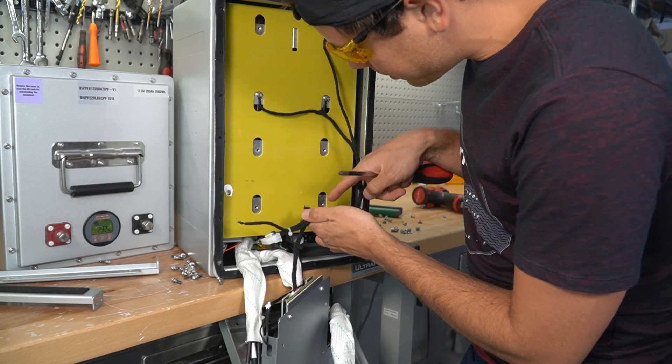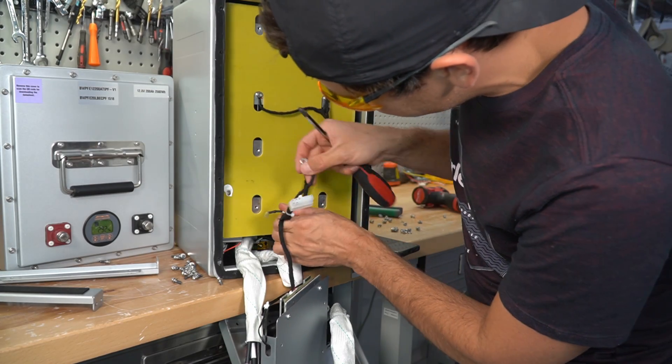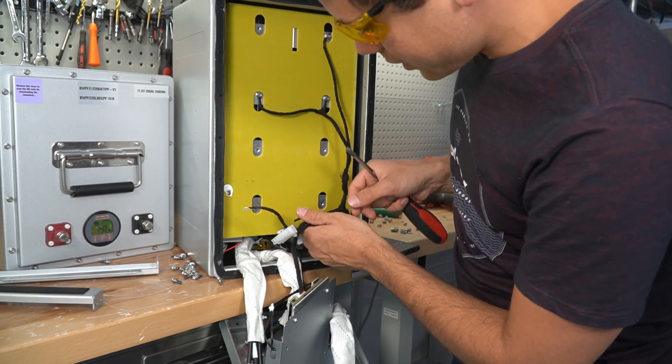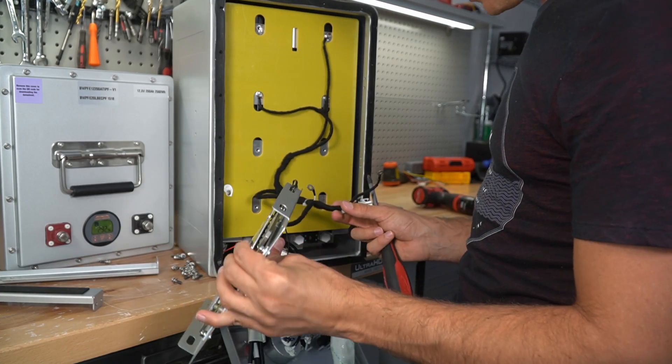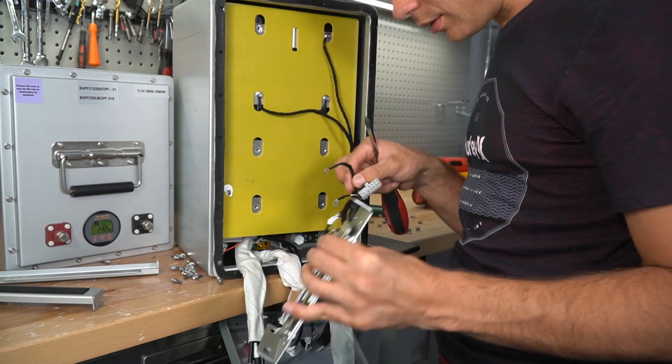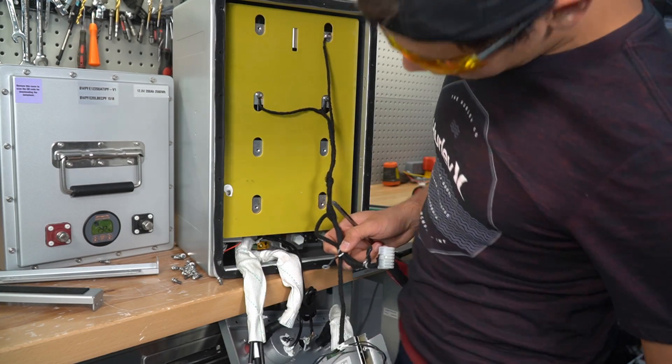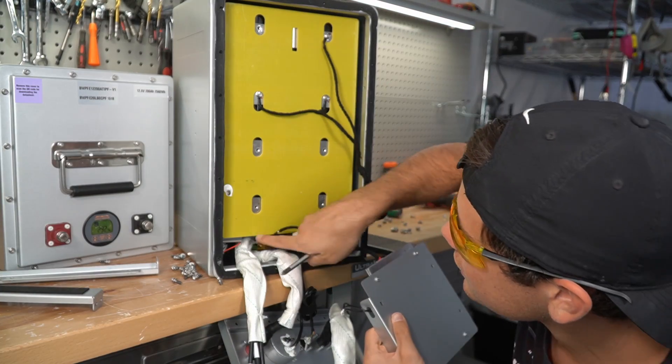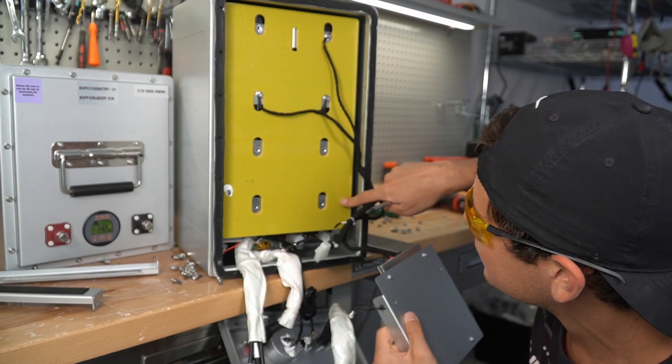And B negative is marked. So I'm going to put that... wait, which way does this go? Oh God, I think it goes this way. Yeah, let's follow the label. B negative. We're going to put it on the negative. I just realized that this is the positive and this is the negative. Gosh dang it.